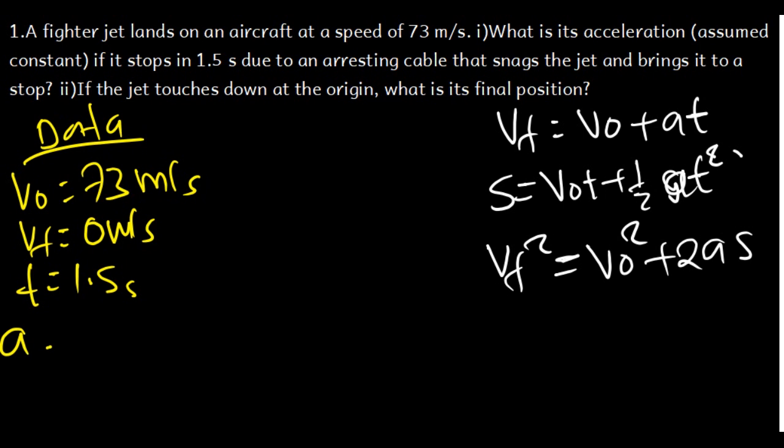The first formula is going to be easy because we have the final velocity, the initial velocity, and the time. We can't choose the third or second formula because we don't have the displacement. Also, we can't use the third formula because there is no time in that formula. So the best formula to use is V_final = V_initial + a·t.